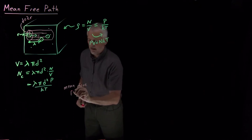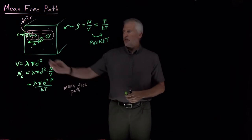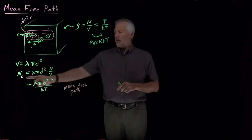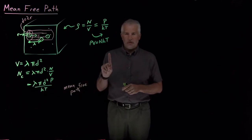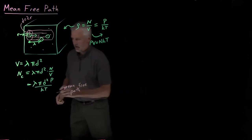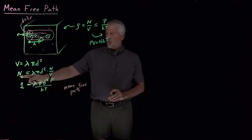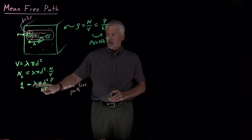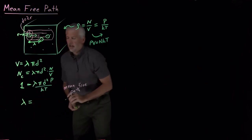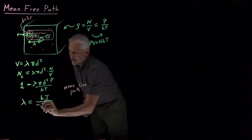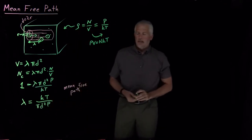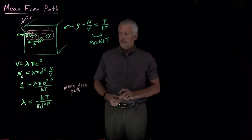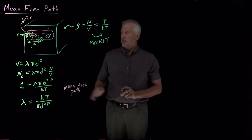The mean free path is not how many collisions are experienced over a distance lambda, but how far the molecule must travel before experiencing its first collision — just one collision. Setting the expected number of collisions equal to one and solving for lambda, we get: lambda equals kT divided by pi d squared times P. That's our expression for the mean free path. However, there's one slight problem with this expression.